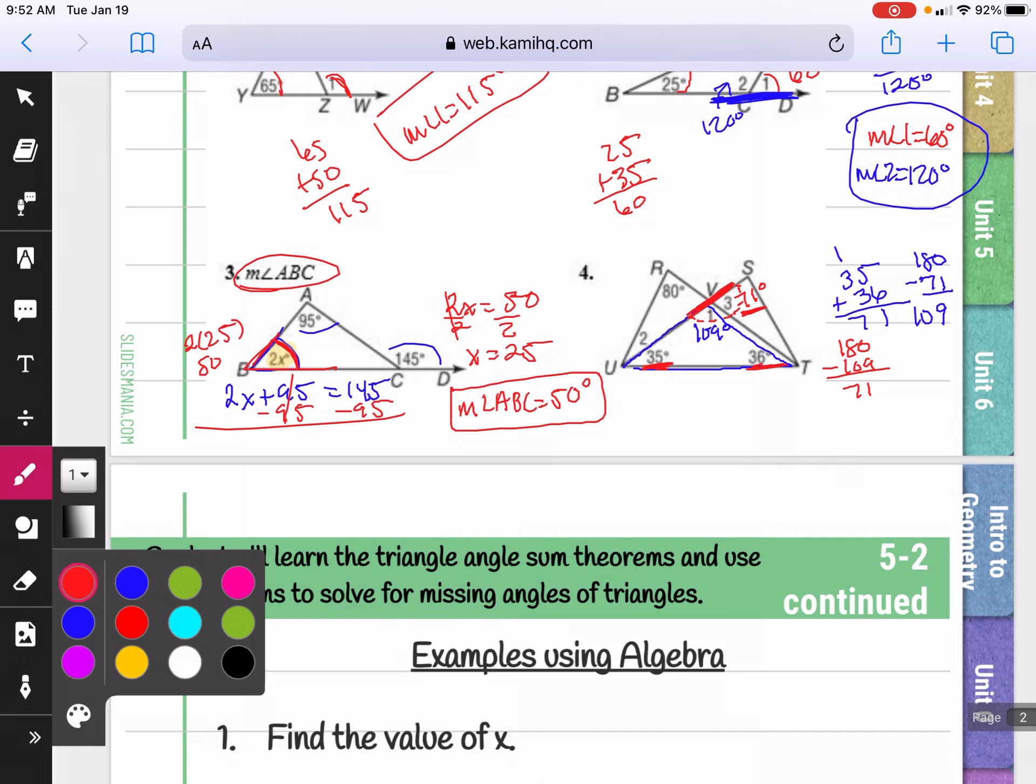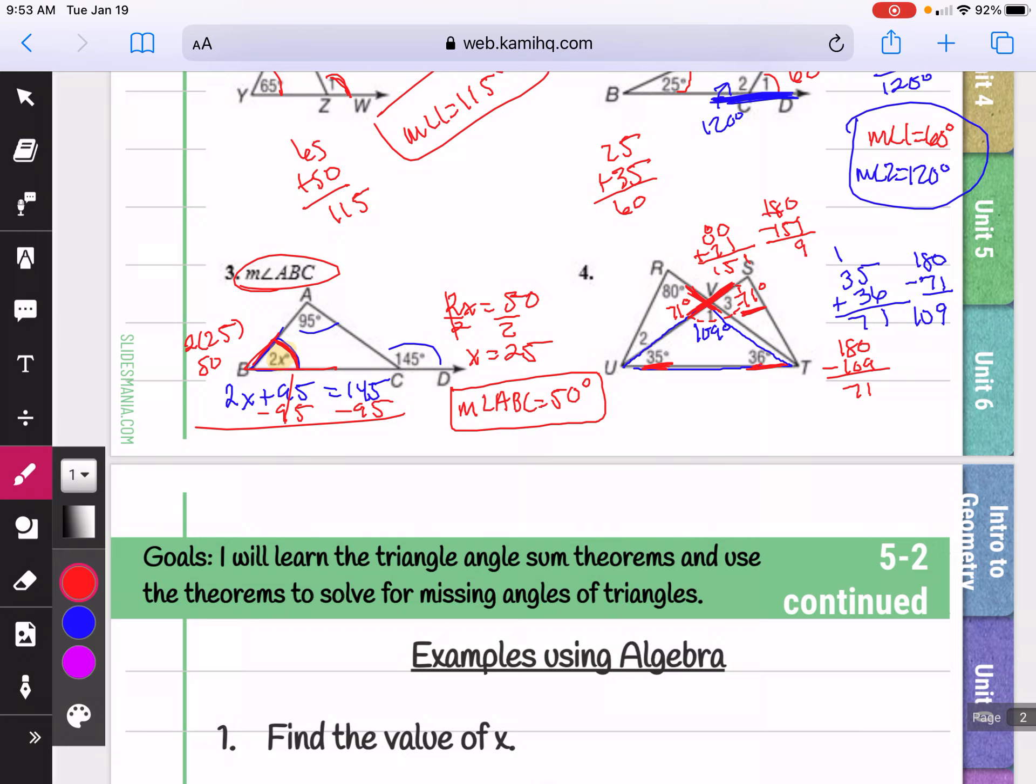Now I want angle 2. Well, here this also forms a straight line. And this is also vertical to the 71. So this is going to be 71 degrees. So now if I add 80 plus 71, I get 151. And if I subtract that from 180, I get 29 degrees for angle 2.